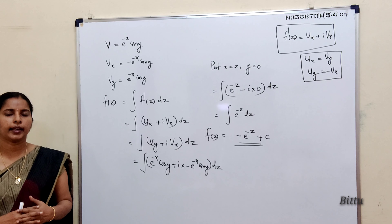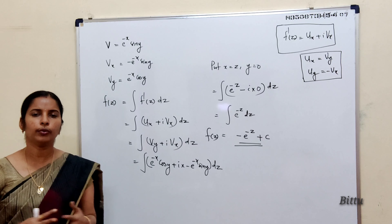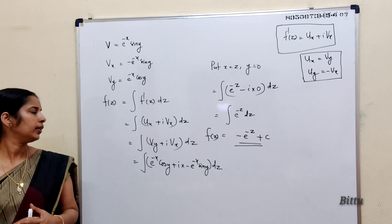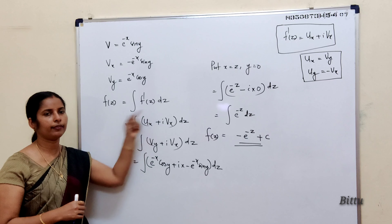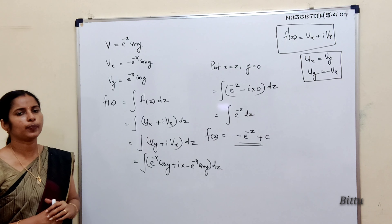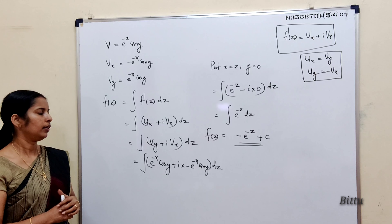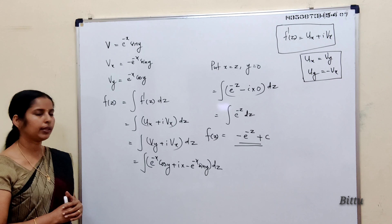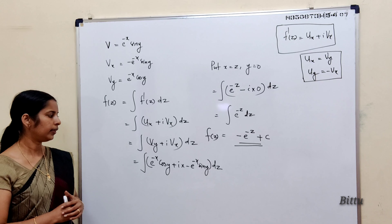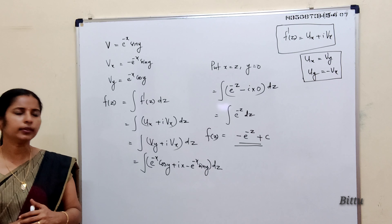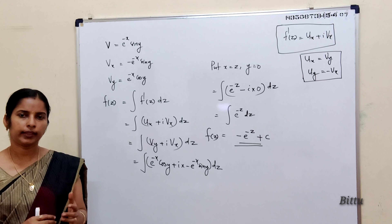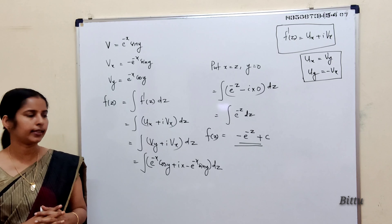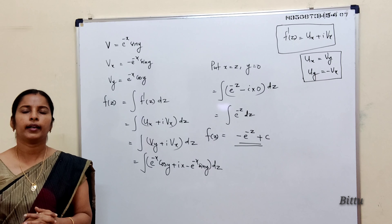This is the method of finding an analytic function directly from u or v by the Milne-Thomson method. We have f(z) = integral of f'(z). f'(z) is u_x + i·v_x. Replace u_x or v_x appropriately using the Cauchy-Riemann equations. Next, put x = z and y = 0, then integrate with respect to z. After integration, add a constant c — that will be the required analytic function.